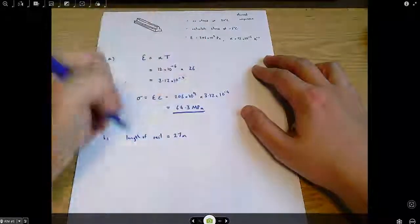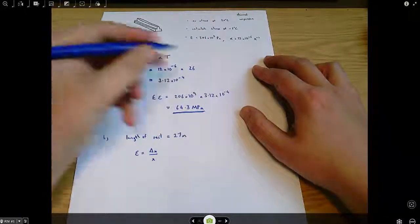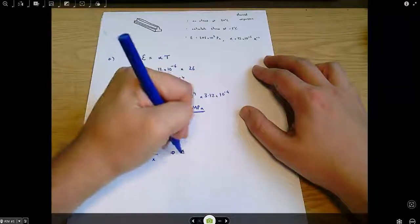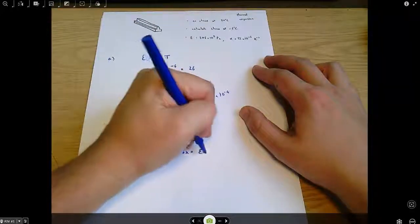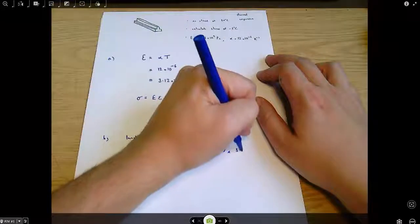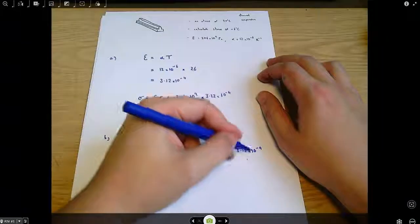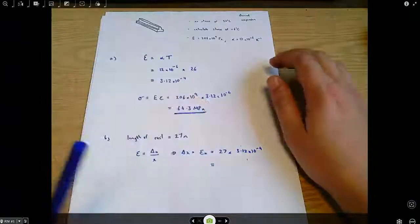So, strain epsilon equals change in length divided by original length. And that means change in length is epsilon x, which is 27 times 3.12 times 10 to the minus 4. Sorry, I put those the wrong way around. This is epsilon and that's x, but you see where they come from.